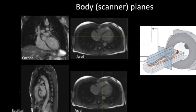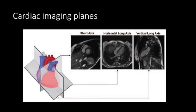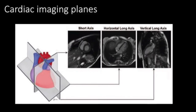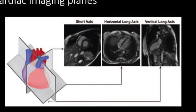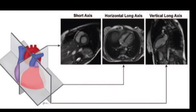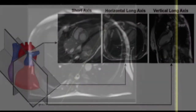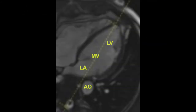The standard cardiac planes are established using the scout images and include the short axis, the horizontal long axis or four-chamber view, and the vertical long axis or two-chamber view. First, we derive the two-chamber or vertical long axis view. This plane is prescribed along a line extending from the cardiac apex to the center of the mitral valve, using the axial body plane images.